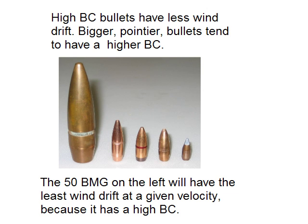High BC bullets — that is, streamlined big bullets — have less wind drift. The .50 BMG on the left will have the least wind drift because it has the highest BC, which is why people like Hathcock like to use it for long range shooting.